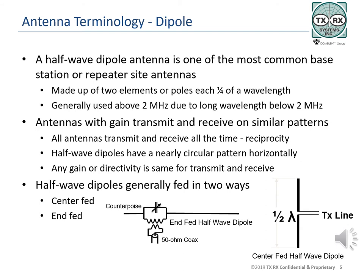Half-wave dipole antennas aren't used very often at frequencies below 2 MHz as their length would be prohibitive, but are used quite often in systems above 2 MHz. All half-wave dipole antennas have similar patterns in the horizontal plane: circular. Because all antennas transmit and receive at the same time, a function known as reciprocity, any gain or directivity will be the same for both transmit and receive, and the antenna's pattern will be the same for both transmit and receive.